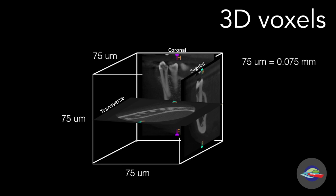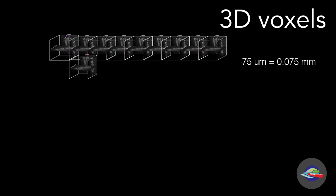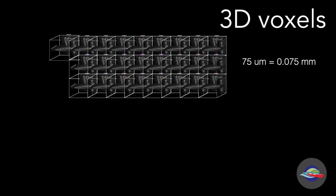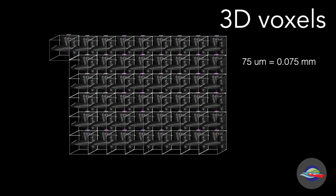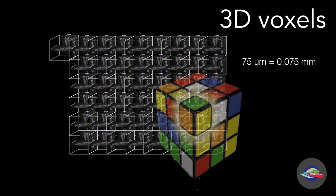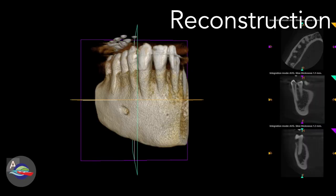During the reconstruction phase, these voxels are stacked on top of one another, with the computer creating a series of blocks similar to a Rubik's cube. When the reconstruction is all said and done — something that takes the computer, which has remarkable power and a top-tier graphics card — it only takes about three to four minutes to create.